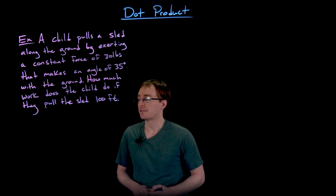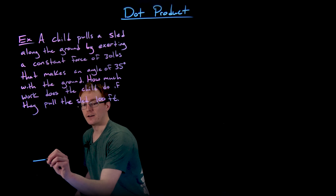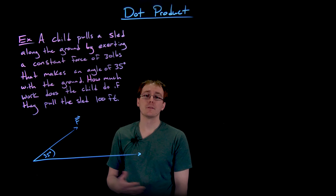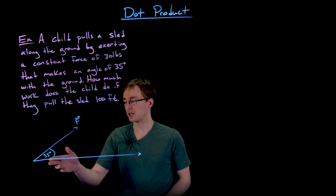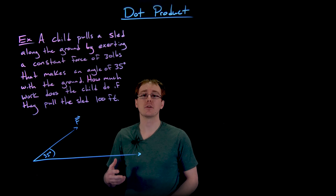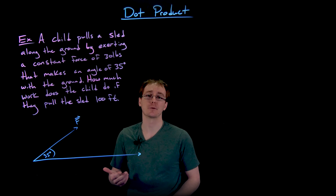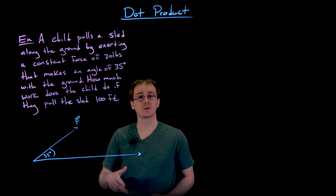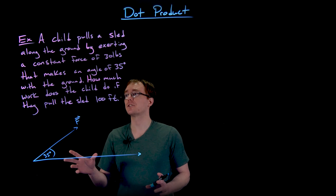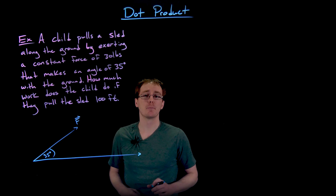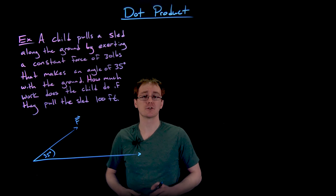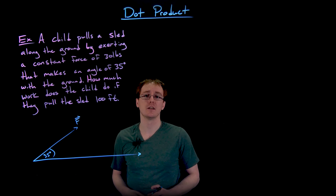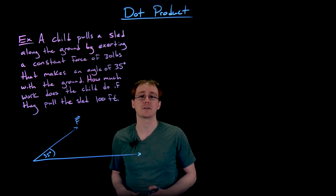That's exactly what we have here. We have a sled on the ground, so let's assume the ground is nice and horizontal. We also have a force acting on the sled — the child pulling the sled at an angle of 35 degrees measured from the ground or the horizontal axis. We can interpret our force as a vector: the magnitude is 30 pounds, and the direction is 35 degrees with respect to the horizontal.